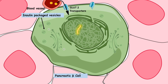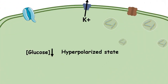Let's delve into the molecular mechanism. In the absence of glucose, the pancreatic beta cell is in a hyperpolarized state. In this situation, an ATP-dependent potassium channel is open, causing potassium to leak out and keeping the cell hyperpolarized.